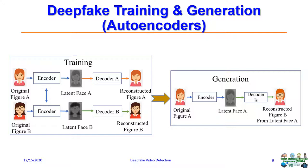To make these videos, two sets of autoencoders are needed — one for the source and another for the target. Both encoders share weights to capture common features of source and target faces. Once training is complete, the latent face of person A is passed through decoder B instead of decoder A. As a result, face B is created from the latent information of face A. This is repeated for all frames to make the deepfake video.